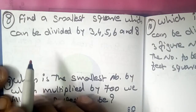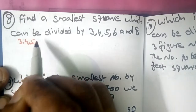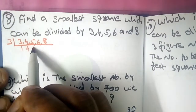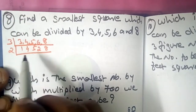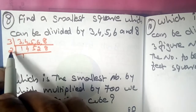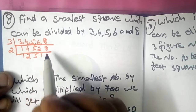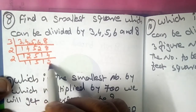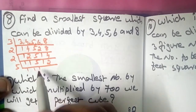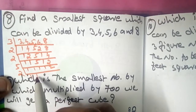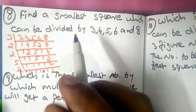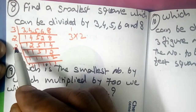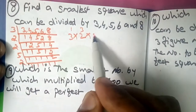Let's find the LCM of 3, 4, 5, 6, 8. Dividing: 2 into 3, 4, 5, 6, 8 gives 3, 2, 5, 3, 4. Again 2: 1, 2, 5, 3, 2. The LCM is the product of all prime factors. This covers all multiple categories and is included.